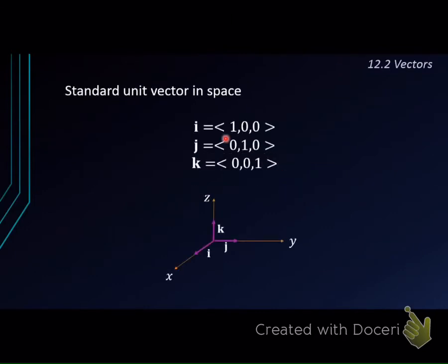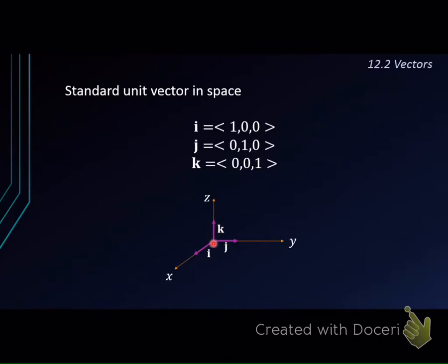There are some standard unit vectors in space that include i, j, and k. Recall that in a three-dimensional system, we have the x-axis, y-axis, and z-axis. So i is (1, 0, 0), which is a unit vector in the direction of the x-axis with magnitude of 1. Then j is in the direction of the y-axis, and k is in the direction of the z-axis. All have the length of 1.